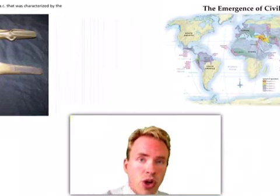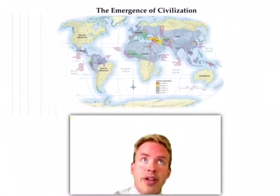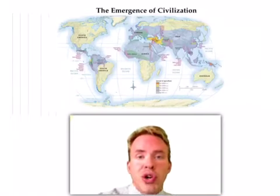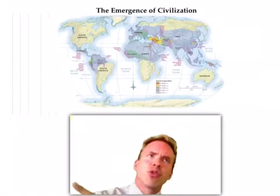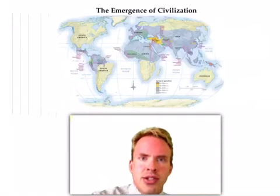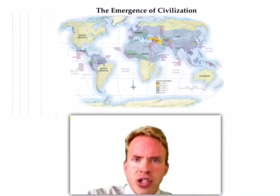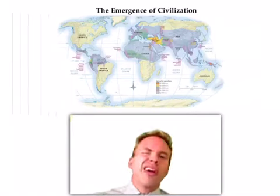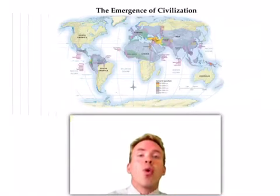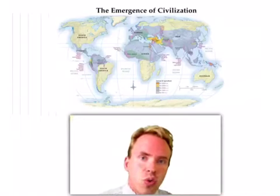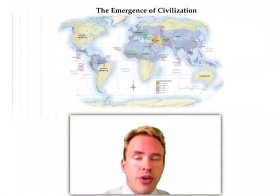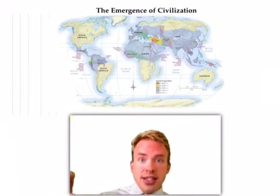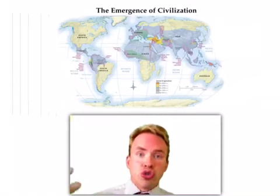This advance in agriculture and all the things that come with it don't happen at all places at the same time — it happens in some places earlier than in others. So far as we can tell, it seems like the earliest place it happens is southwestern Asia, the region we call the Middle East. Crucially, what this advance allows — what the Neolithic Revolution allows — is for some people to start doing other things and for people to congregate in cities and form larger groups than had ever existed before.